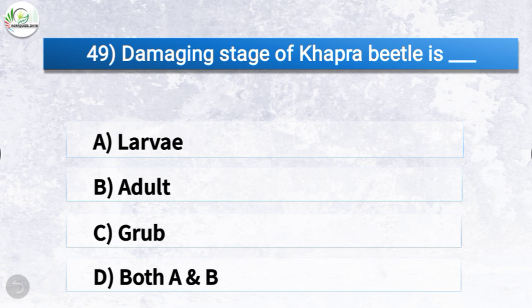Question number forty-nine: the damaging stage of khapra beetle is which one? The options are larvae, adult, grub, or both A and B. The correct answer is option C, grub. So the damaging stage of khapra beetle is grub.